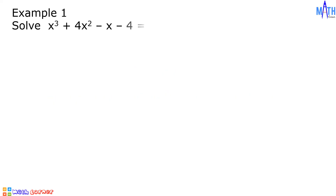Example number 1: let us solve x cubed plus 4x squared minus x minus 4 equals 0.